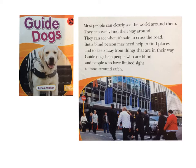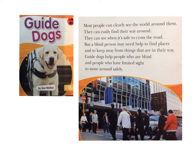Let's see what it says on this page. Most people can clearly see the world around them. They can easily find their way around. They can see when it's safe to cross the road. But a blind person may need help to find places and to keep away from things that are in their way. Guide dogs help people who are blind and people who have limited sight to move around safely. So this information on this page is all about what guide dogs are and what they do, so all those ideas have been put together in one paragraph.